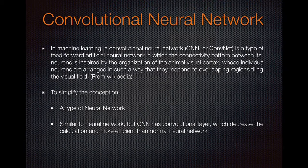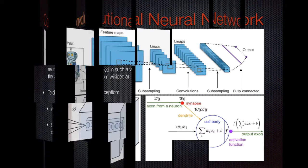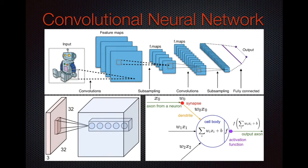Convolutional neural network is a type of normal neural network, but it is more motivated by the vision part of creatures. So it can be very suitable for image analysis. Also, because of its convolutional layers, it can be more efficient than normal fully connected neural networks. Here are some examples about convolutional neural networks — we can see the structures of CNN and learn how it works.